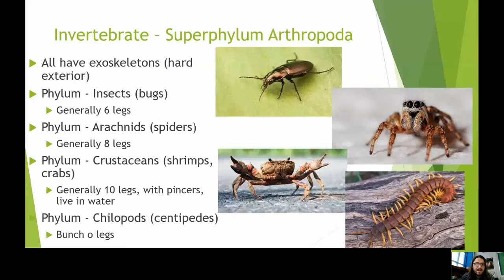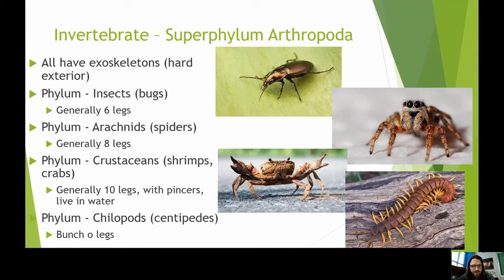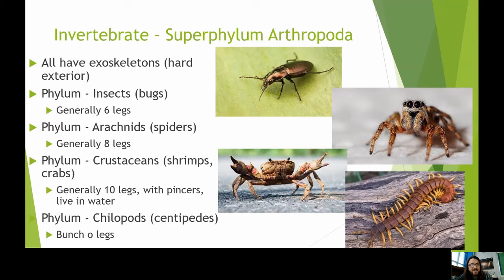The last main invertebrate category — and one of the most dominant life forms on Earth — is the superphylum Arthropoda. These are the creepy-crawly things with hard exterior exoskeletons instead of an internal backbone. This group includes insects, arachnids (spiders), crustaceans (shrimps and crabs), and myriapods (centipedes and millipedes).